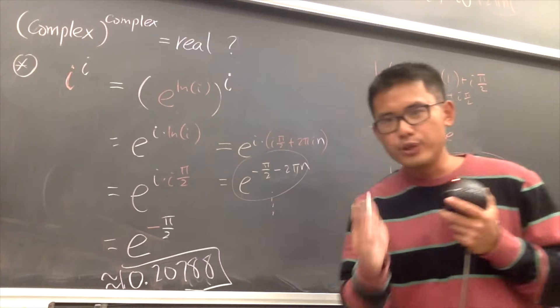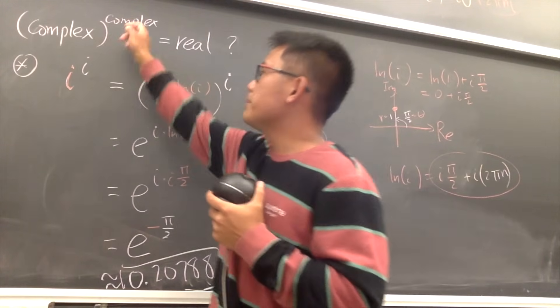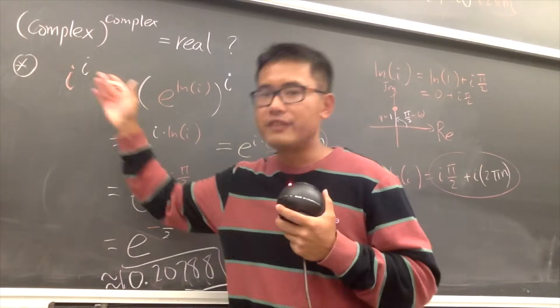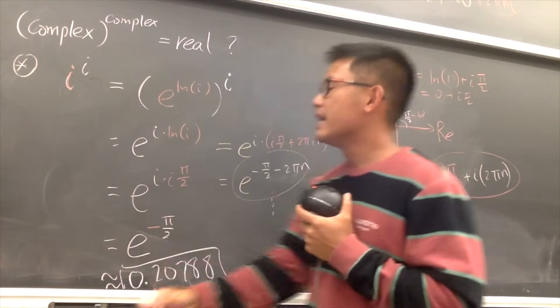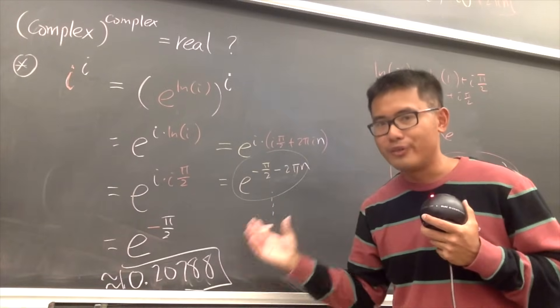That's it! This is really cool — a complex number raised to a complex number. You have i raised to the i, and at the end you end up with a real number.